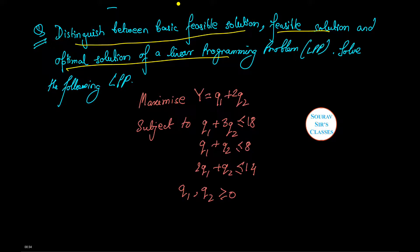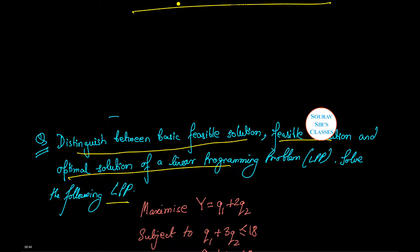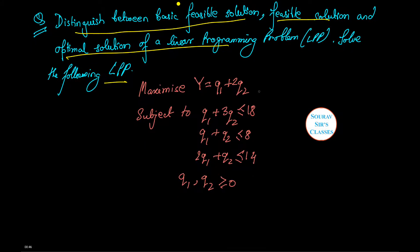We have to also solve the following LPP. Let us first solve the LPP then we'll go into the theoretical part of this question. We have maximize Y equals Q1 plus 2Q2 subjected to the following constraints and this restriction.